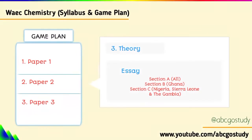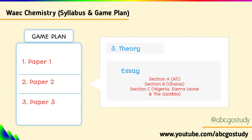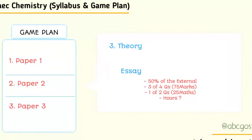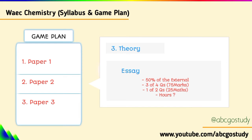In the theory aspect with Sections A, B, and C: Section A is for all candidates, Section B is for Ghana alone, while Section C is for Nigeria, Sierra Leone, and Gambia. So if you are in Nigeria, you do only A and C; if you are in Ghana, you do only A and B. In Section A, you will see 4 questions and are required to attempt 3 of them for 75 marks, meaning each question is worth 25 marks. In Section B and C similarly, you answer one question from a choice of 2 questions.